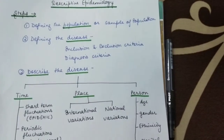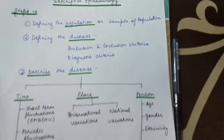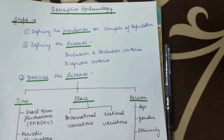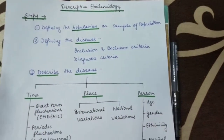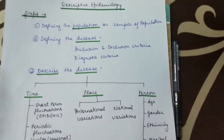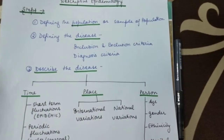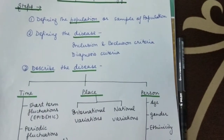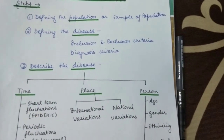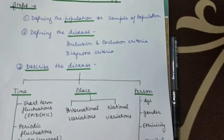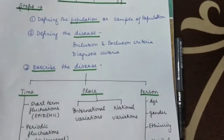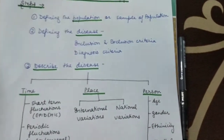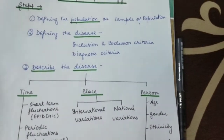Hello, this is a video on descriptive epidemiology — a very important topic in the epidemiology series. We will be talking about the steps of descriptive epidemiology. The first step is defining the population or the sample population. Once you have defined the population in which you do the study, you then have to define the disease.